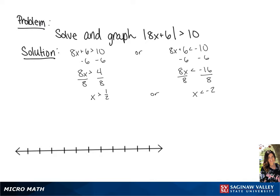So we have two solutions: x is greater than 1 half, or x is less than negative 2. In interval notation, this is infinity to negative 2 in union with 1 half to positive infinity.